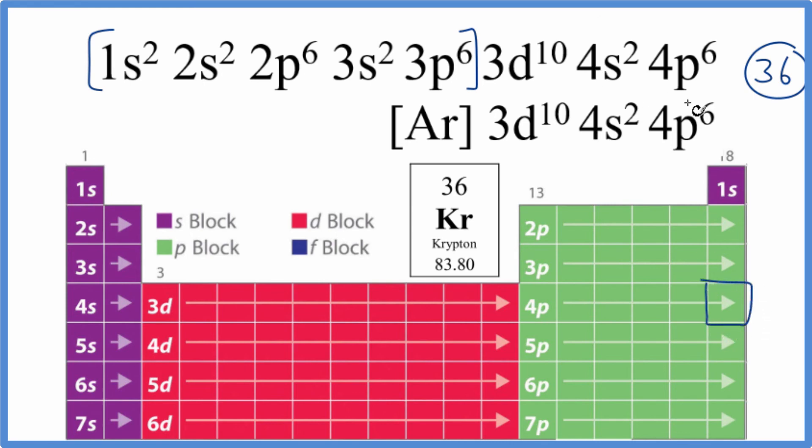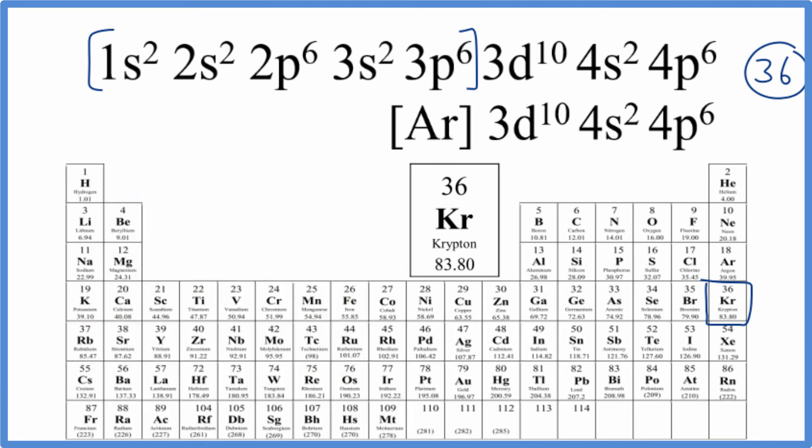This is the element that has this electron configuration—krypton, just like we found before. So to summarize, the element with electron configuration 1s² 2s² 2p⁶ 3s² 3p⁶ 3d¹⁰ 4s² 4p⁶ is krypton. Thanks for watching.